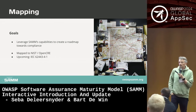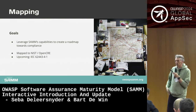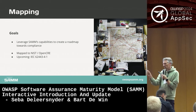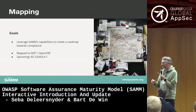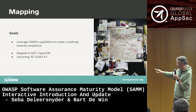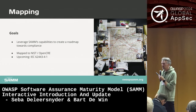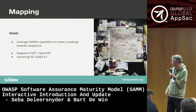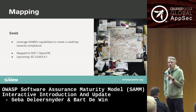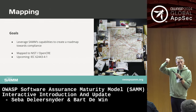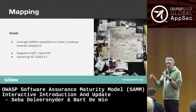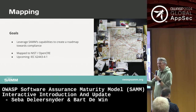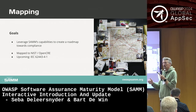In the past we followed a different strategy — we created a lot of one-to-one mappings: SAMM to standard XYZ. We're still doing that for particular standards like NIST and IEC 62443 (the IoT standard). But we've also chosen to leverage OpenCRE. OpenCRE is an OWASP project that maps different standards relevant in cybersecurity and application security together.